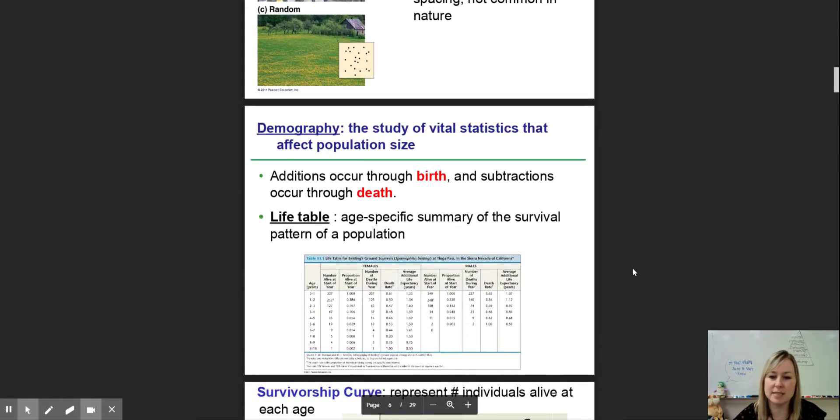Demography is the study of statistics when it comes to population size. This takes into account birth rate and death rate. You can summarize this data in something called a life table, and that is how ecologists and demographers study populations. They look at how many at each age group are alive, how many are of reproductive age, how many babies they're having, and they can figure out life expectancy and if the population is increasing or decreasing.